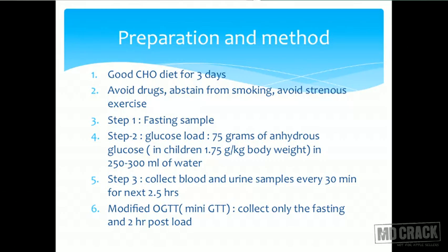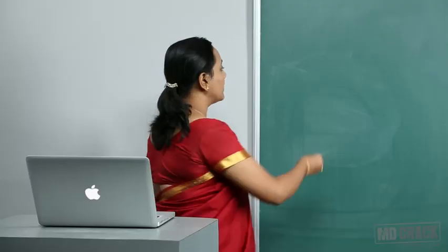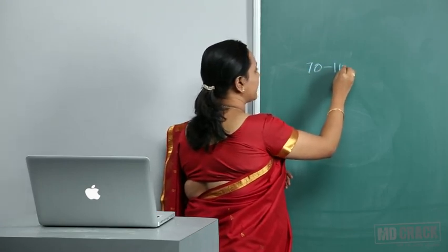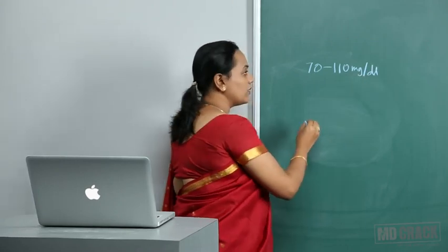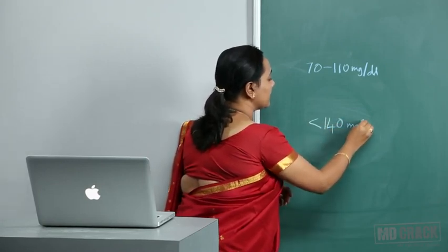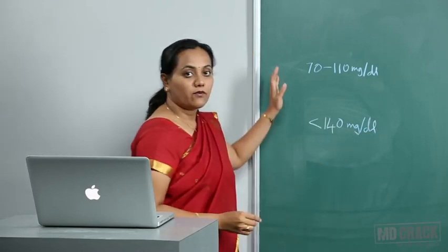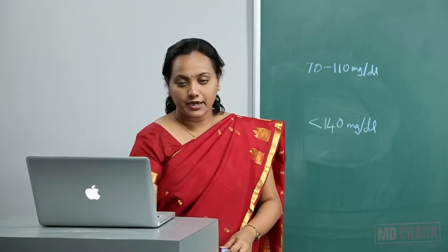Now let us look at the interpretation of this test. Normally, the fasting blood plasma glucose should be between 70 to 110 milligrams per dl, and the two-hour post-load value should be less than 140 milligrams per dl. These are the normal reference values.